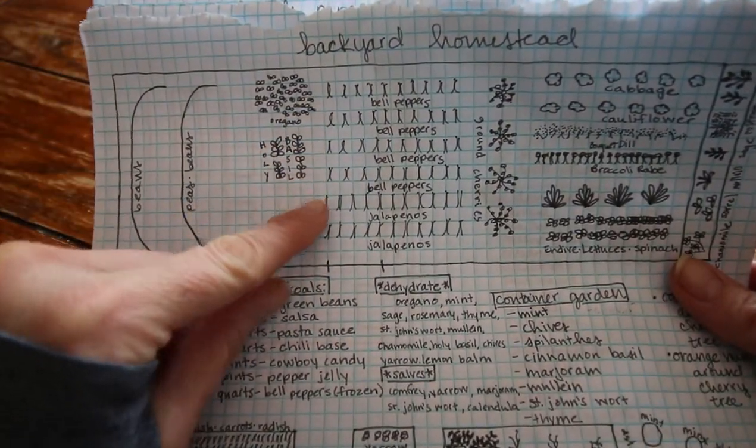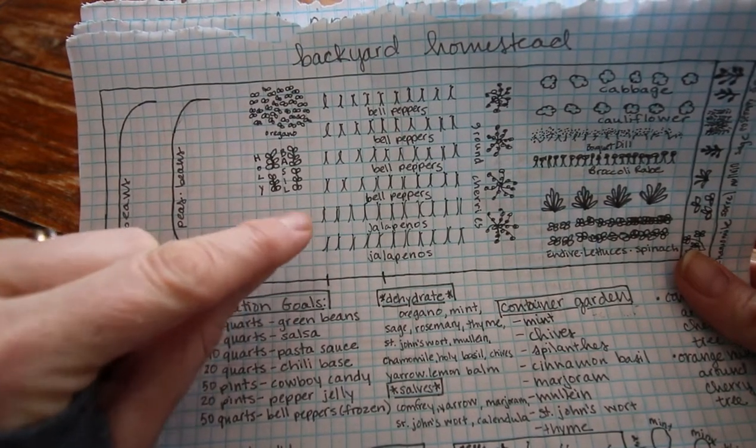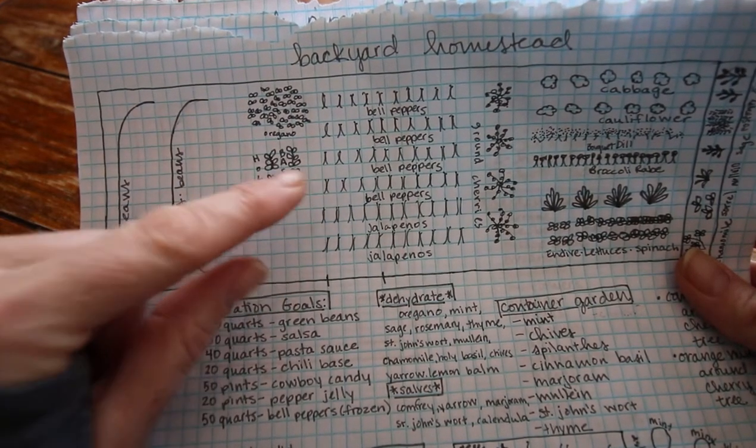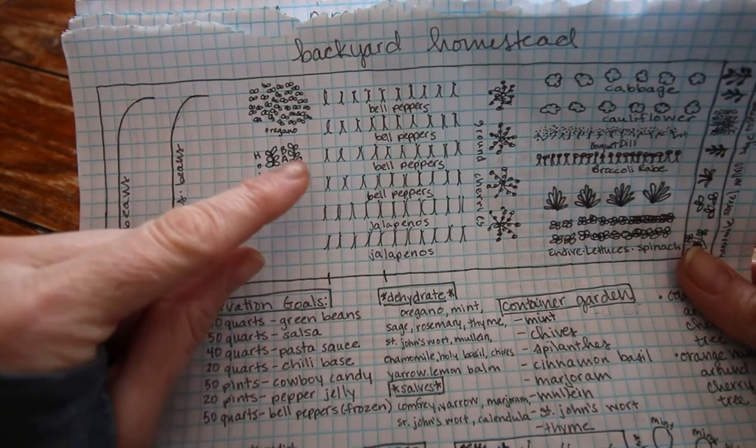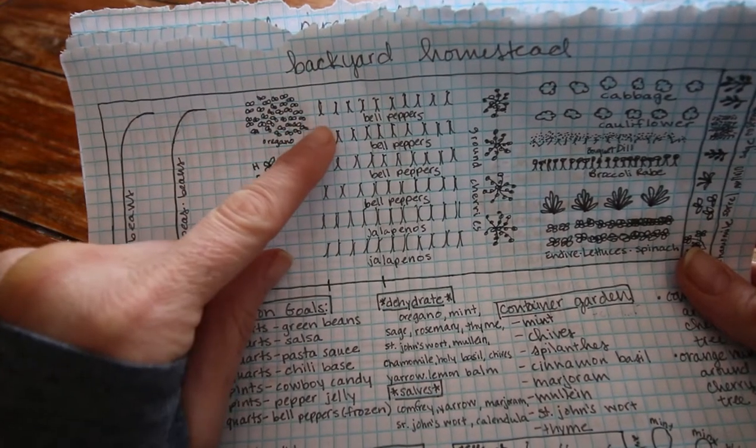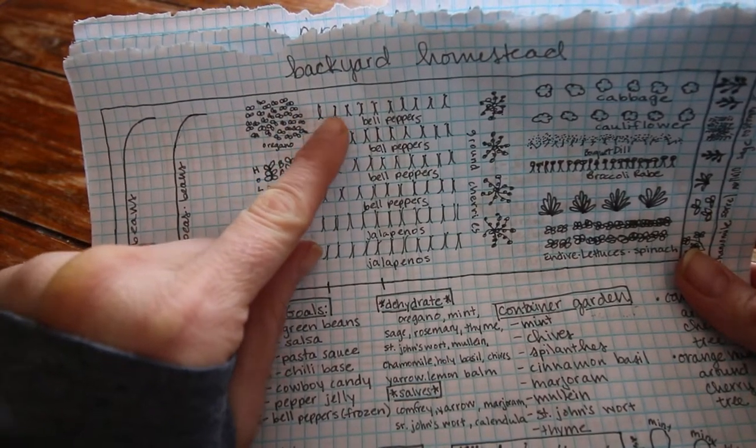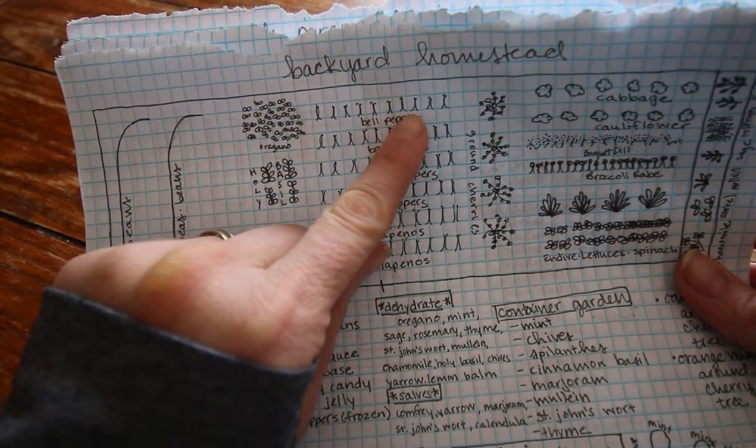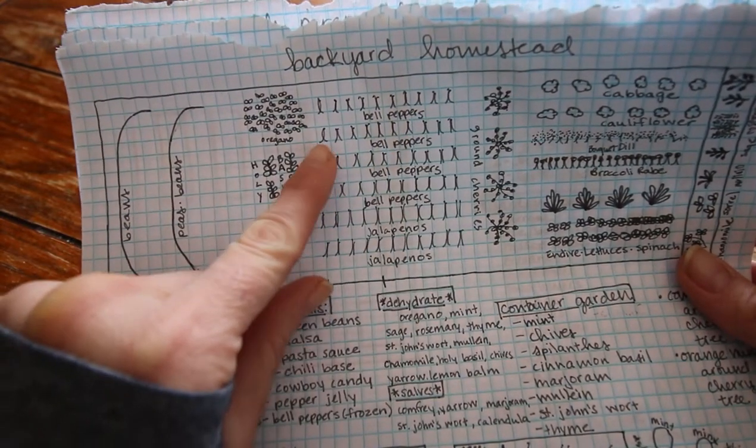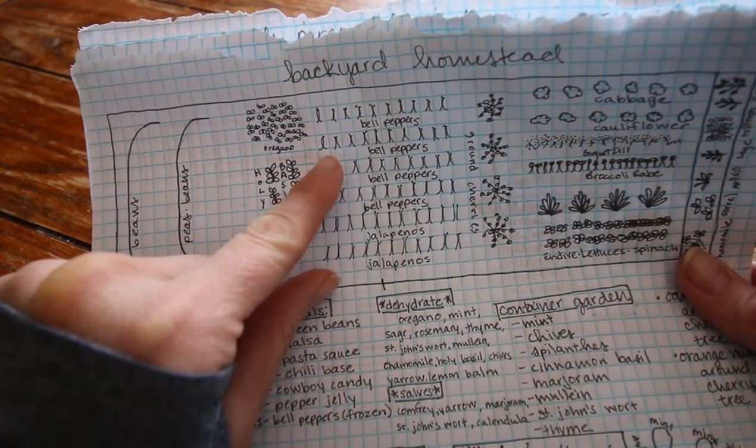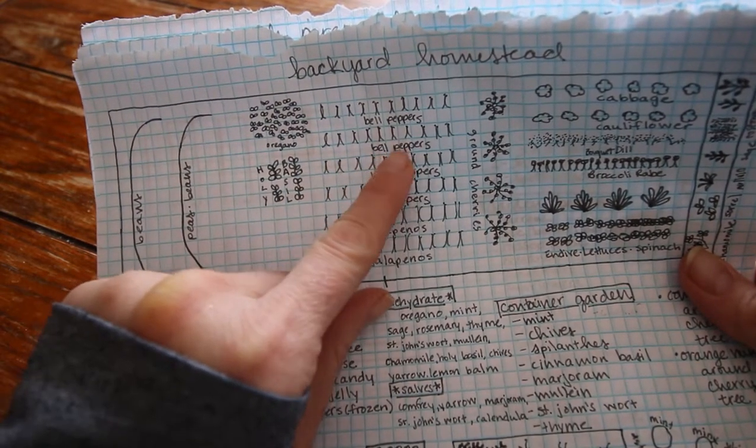Bell peppers and jalapenos. We eat a ridiculous amount of bell peppers, so I'm going to plant a ridiculous amount of bell peppers. I do plant them about a foot apart and this year I'm gonna stake them. I've never really staked them before but last year I had some that were flopping over.